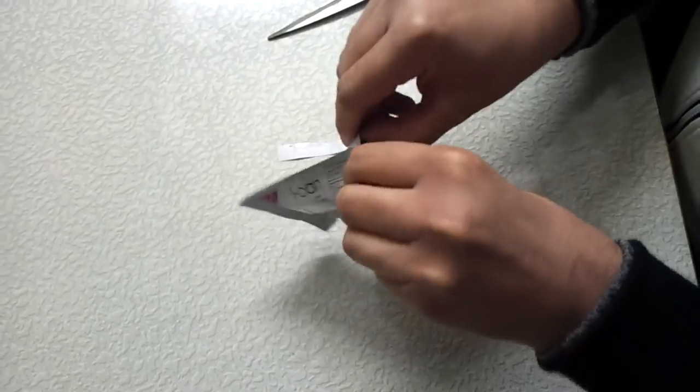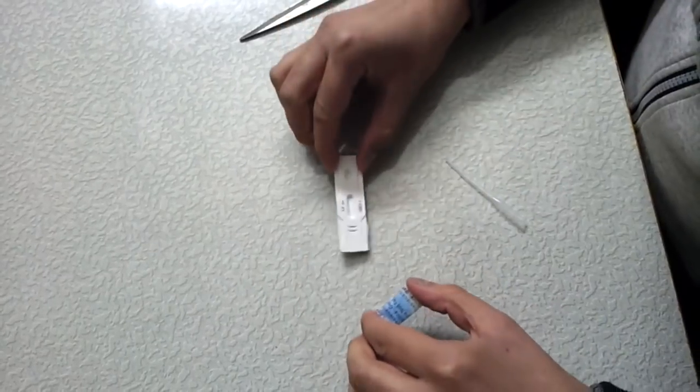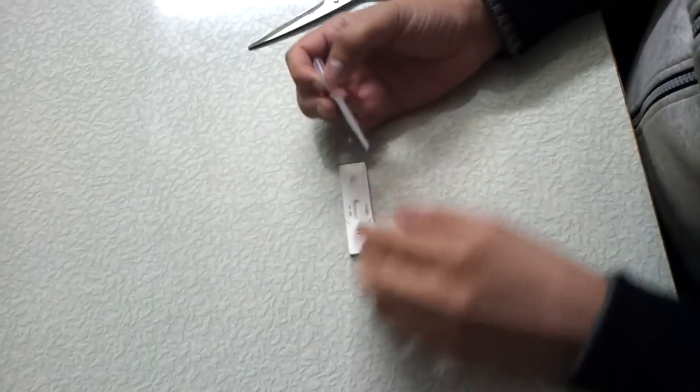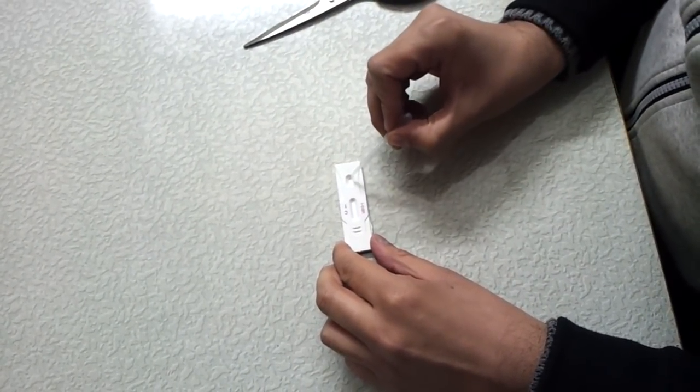Let me open it up. So this is a device and this is a dropper. I will take three drops of urine in this dropper, and I have to put three drops in this circular area.